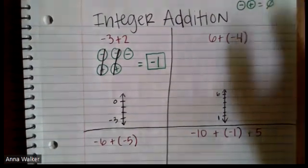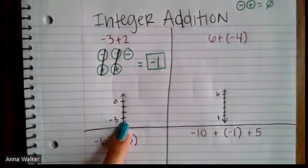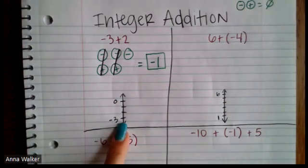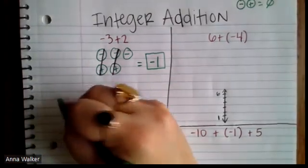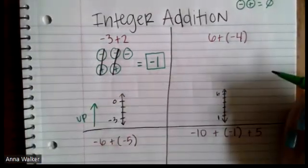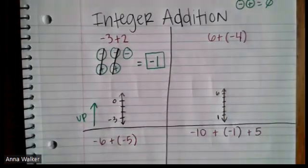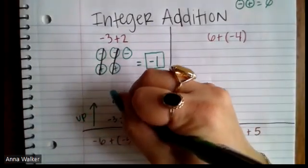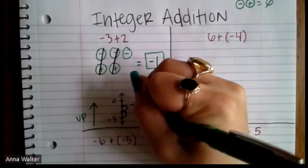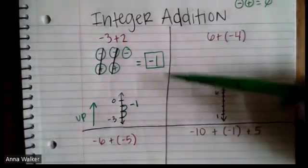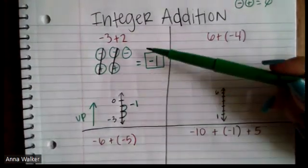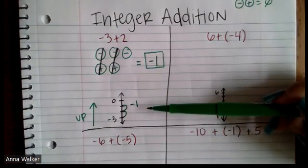If we show this on a number line: if somebody was at negative three, which is three units below zero, and we add two, we go up the number line in the direction of the positives. When we add, we're always trying to increase. So going up two spots, we end up at negative one. Those are two different ways to model the problem — with counters and with the number line.